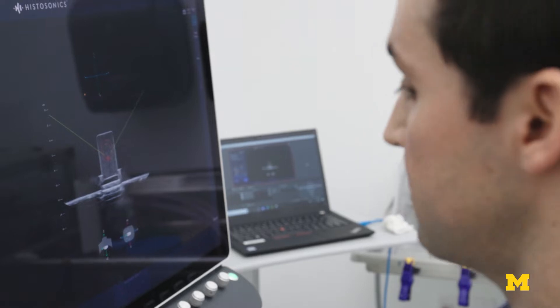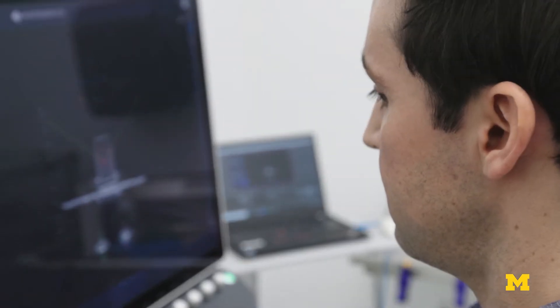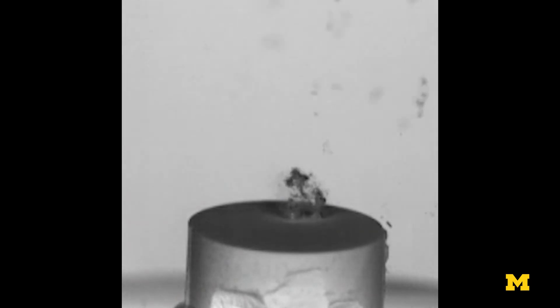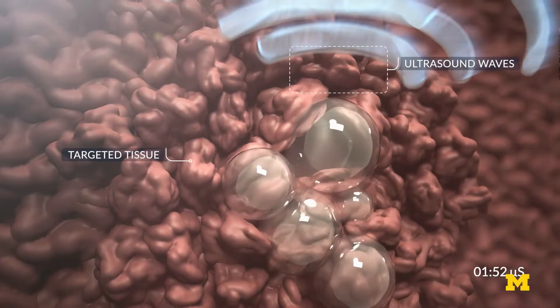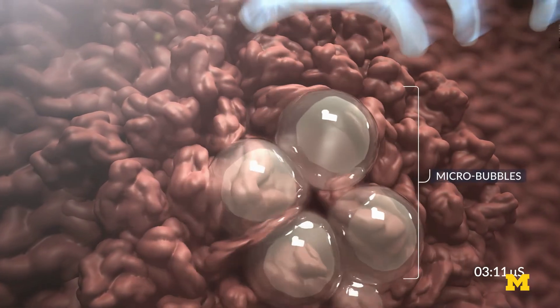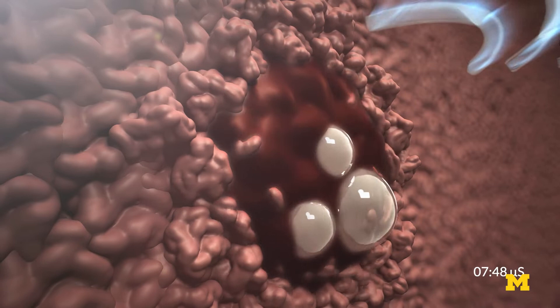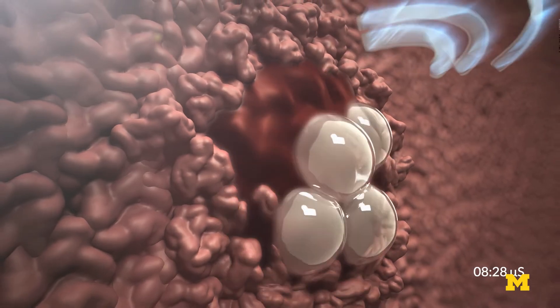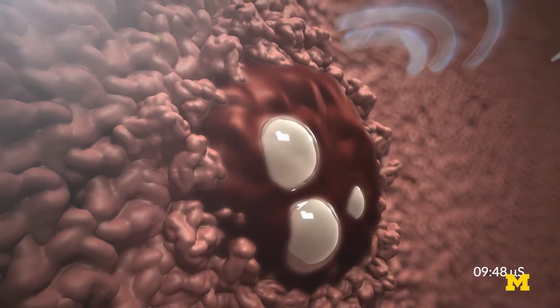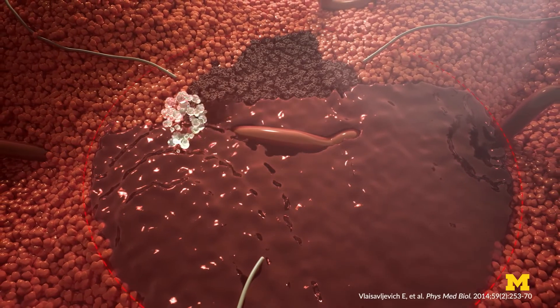Histotripsy offers an option that homes in far more precisely on the tumor, with minimal recovery for the patient. Histotripsy uses microsecond ultrasound pulses to activate the nanometer gas pockets in our body, and then generate microbubbles, making the microbubbles expand and collapse within a very short timeframe. That creates very high mechanical strain and stress to disrupt the disease cells, such as tumor cells.